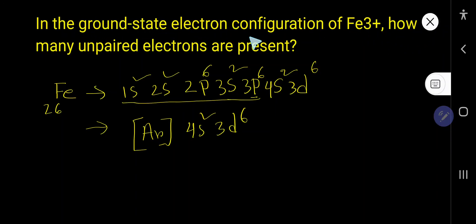In the ground state electron configuration of Fe3+, how many unpaired electrons are present? The answer is 5.